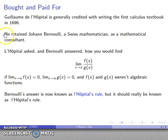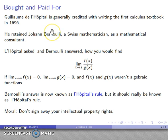Because L'Hopital actually paid Bernoulli for the answer. He was a consultant, and the moral of this is don't sign away your intellectual property rights. Now don't feel too bad for Bernoulli. He was such a prominent mathematician that there are many, many things named after him. So losing the naming rights to this one particular rule is not really that big a deal.